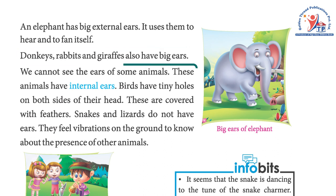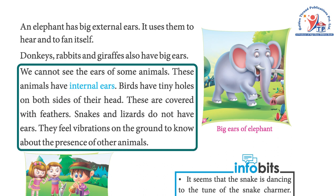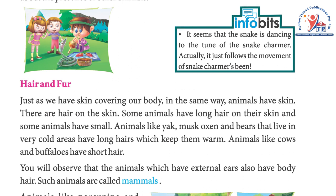Donkeys, rabbits, and giraffes also have big ears. We cannot see the ears of some animals — these animals have internal ears. Birds have tiny holes on both sides of their head, which are covered with feathers. Snakes and lizards do not have ears; they feel vibrations on the ground to detect the presence of other animals. It may seem that a snake is dancing to the tune of a snake charmer, but actually it just follows the movement of the snake charmer's instrument.